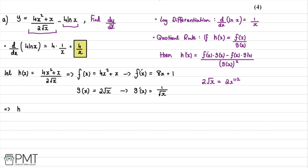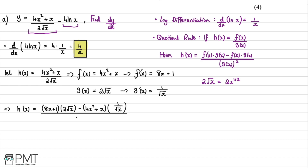We now apply the quotient rule, substituting our values. So the derivative of h(x) is: (8x + 1)·(2√x) − (4x² + x)·(1/√x), all divided by (2√x)². Before combining everything, we'll simplify this h'(x) expression, working through it slowly.